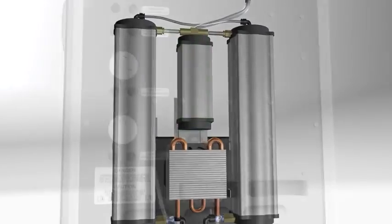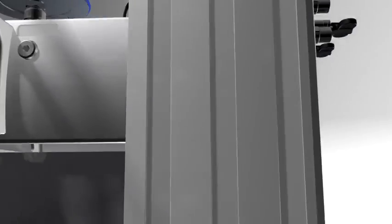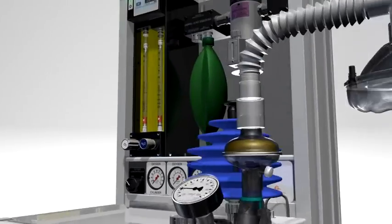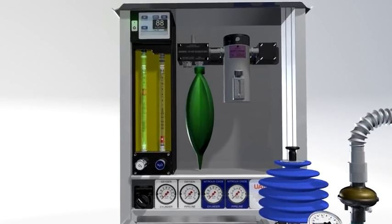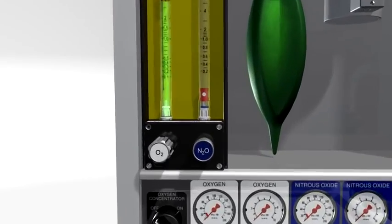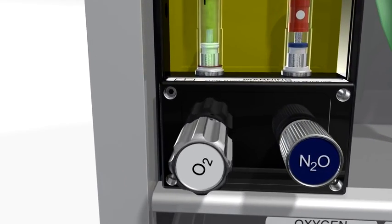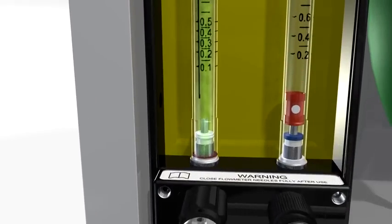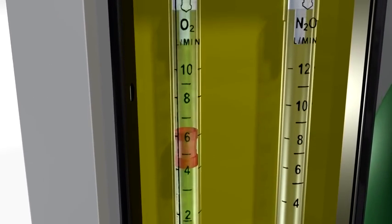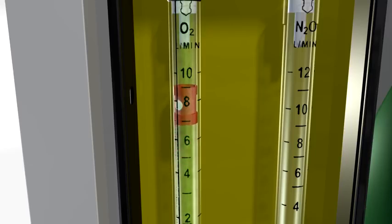The UAM produces up to 10 liters per minute of oxygen. The oxygen then travels through the flow meter into the back bar and reservoir bag. The flow meter controls the amount of oxygen entering the back bar and available for the patient. The spinning bobbin shows the flow rate in liters per minute.